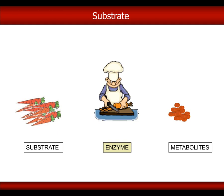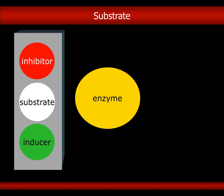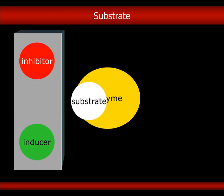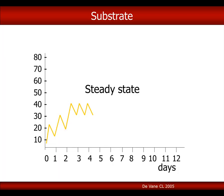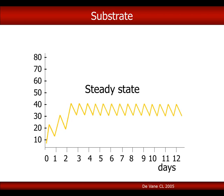If carrots are our substrate — maybe a drug or any other — we see that when they are processed by an enzyme, or a cook, they are transformed into slices, namely the metabolites. In other words, the substrate binds the enzyme, it is transformed, and is usually made more hydrophilic. The substrate blood concentration, in repeated administrations, will grow in the first few days and then will reach a steady state.